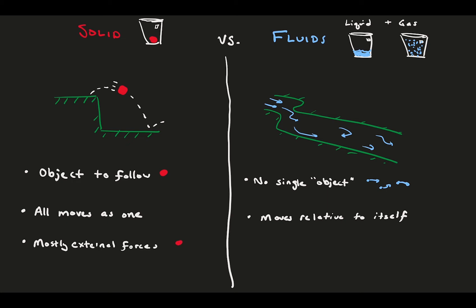Considering the forces, solids generate and respond to mostly external forcing. Things acting on the ball from the outside tend to move it. A trademark of fluids, however, are the internal forces it experiences, particularly because it can move relative to itself. That means it can impart a shear stress and cause localized motion.